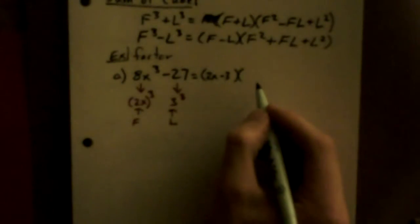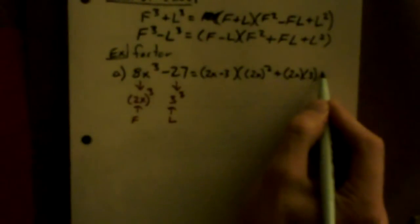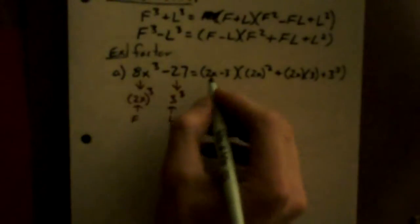Times F², that's F which is (2x)², plus F times L, that's 2x times 3, plus L², which is 3². So this is all equal to (2x - 3) times (4x² + 6x + 9).